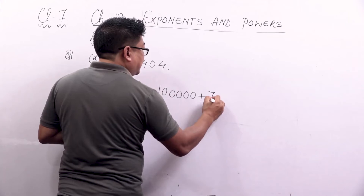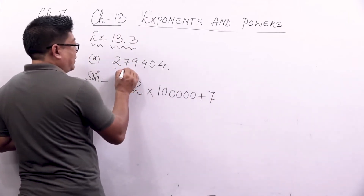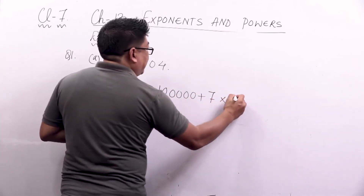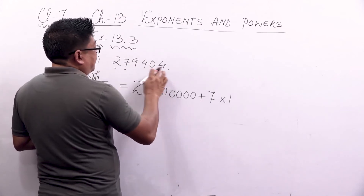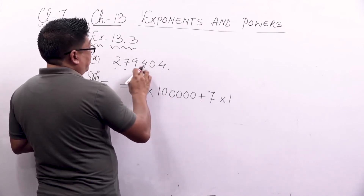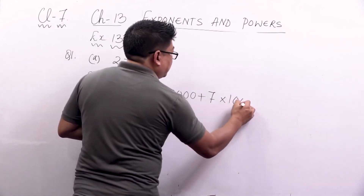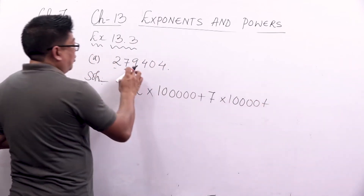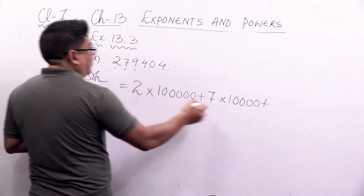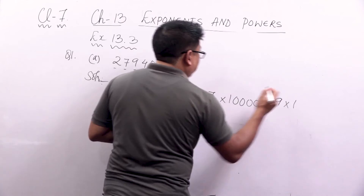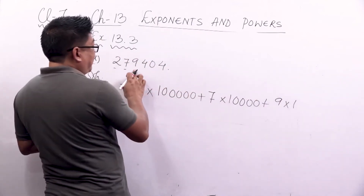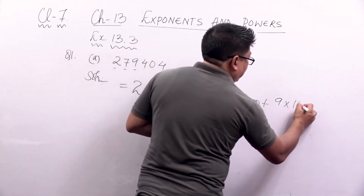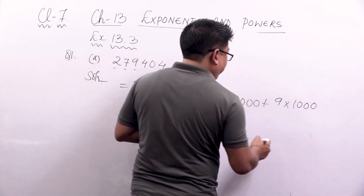Now look at 9 — count the number of digits after 9: 1, 2, 3 — so 9 into 1000, which is 3 zeros. Then 4 into 1, 2 zeros, which is 100. Then 0 into 10, which is 1 zero. And finally 4 into 1.